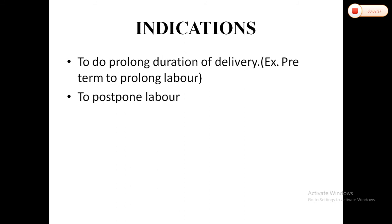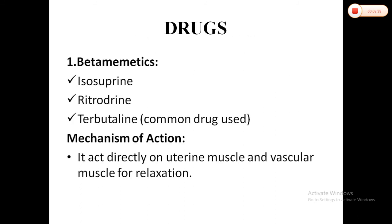Tocolytic drugs include: first, beta mimetics — under this category come three drugs: isoxsuprine, ritodrine, and terbutaline. Terbutaline is the most commonly used drug to relax uterine muscles during pregnancy. Its mechanism of action: this drug acts directly on uterine muscle and vascular muscle to cause relaxation.